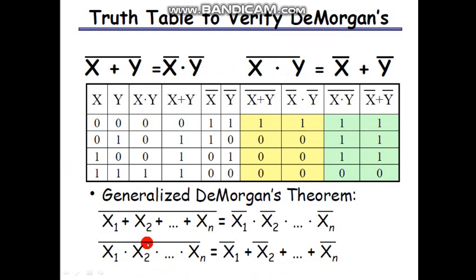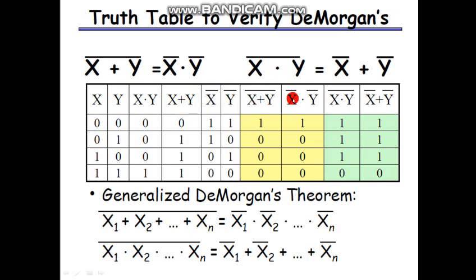To verify the theorem, we first take two variables x and y with four combinations: 00, 01, 10, and 11. Then we compute columns for x·y, x+y, x bar, y bar, (x+y) whole bar, x bar·y bar, (x·y) whole bar, and x bar plus y bar.